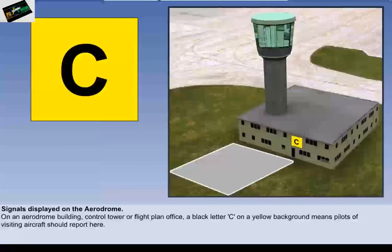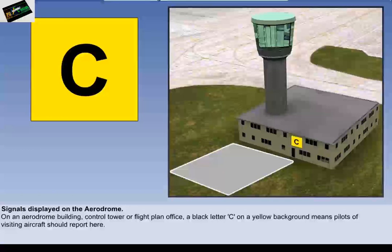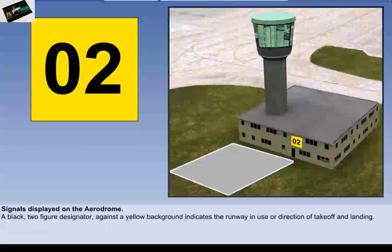On an aerodrome administrative building, control tower or flight plan office, a black letter C on a yellow background means pilots of visiting aircraft should report here. Normally located on the control tower building, a black two-figure designator against a yellow background indicates the runway in use or direction of take-off and landing. This completes the section on signals on the airfield runways and building.